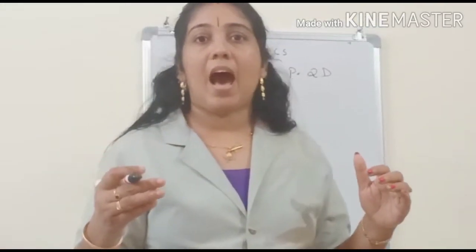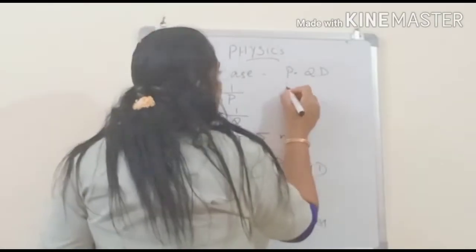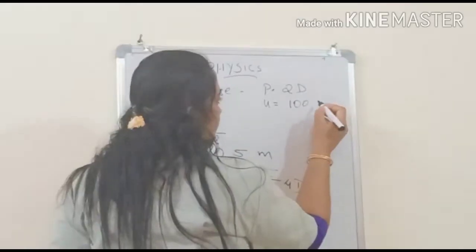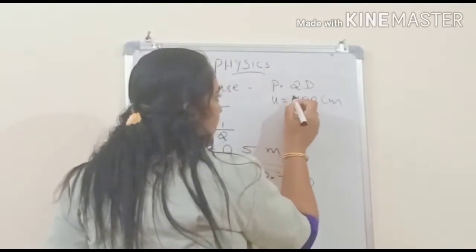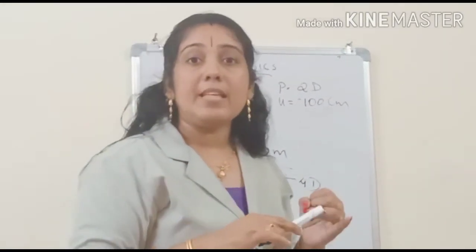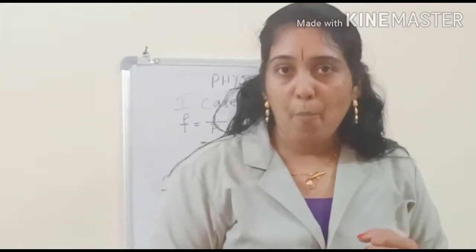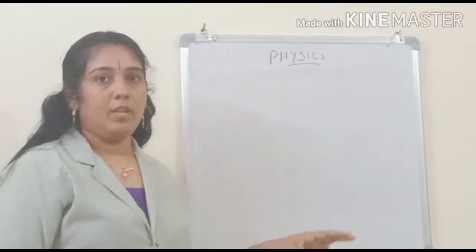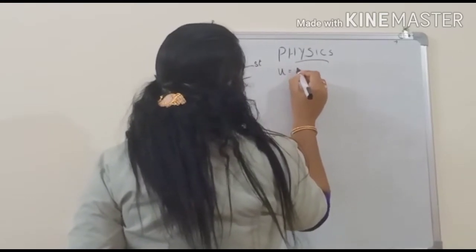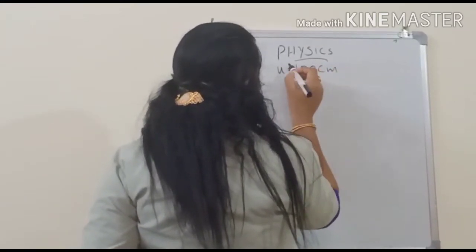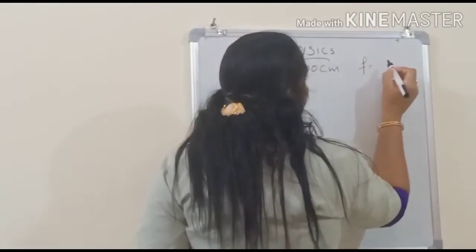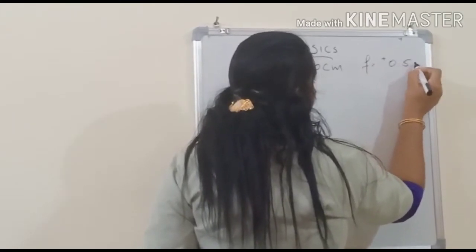For the second question, we have object distance U equals 100 cm. U is always negative, so U equals minus 100 cm. We want to find image distance in both cases and also magnification. For the first case, U equals minus 100 cm and F equals plus 0.5 meter.